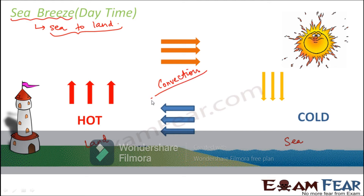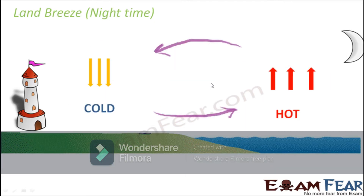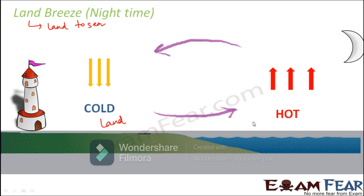We have learnt about convection while discussing the lesson on heat, where we also discussed sea breeze and land breeze. Just the reverse happens during night. At night time, the cold air flows from the land towards the sea, and that is why it is called land breeze — land to sea. During night time, the land remains cold, so the air above the sea will be comparatively hotter. The warmer air rises up, and the cold air from the land moves towards the ocean to take the space emptied by the warm air. So a cool breeze blows from land towards sea during night time — this is called land breeze.